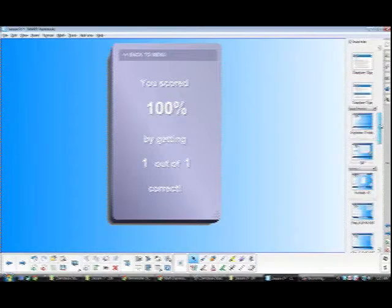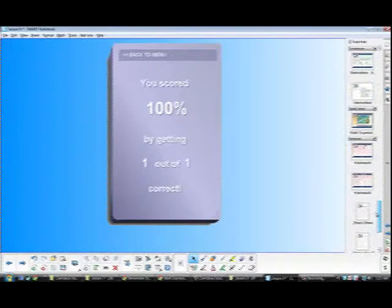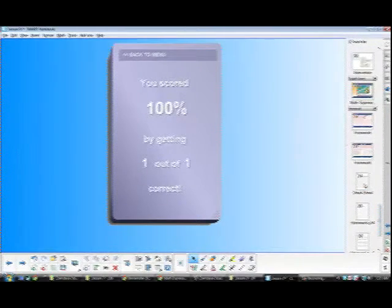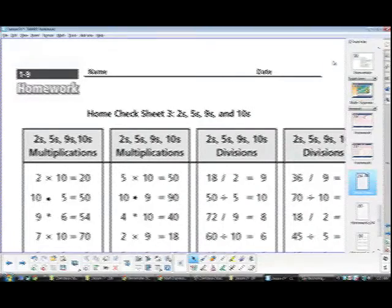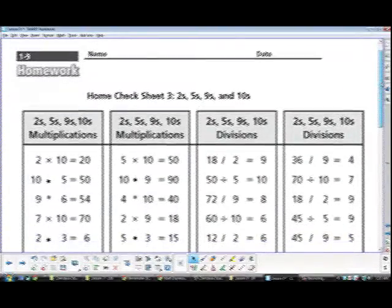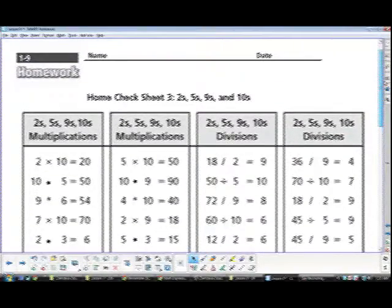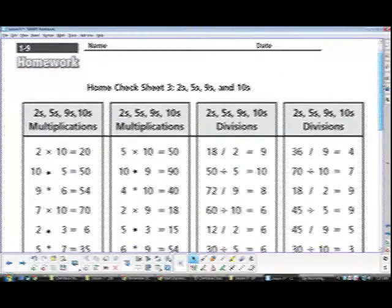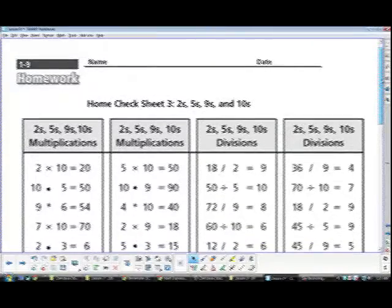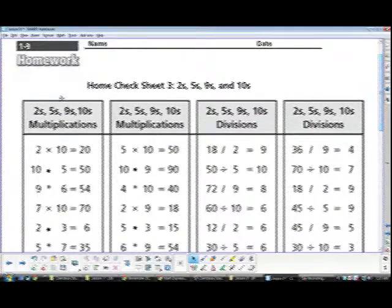Okay. We're on problem number 4. Well, before we get there, I got problem 5 through, I think, 11 today. This will be going home probably on Thursday, Friday, probably Friday. But, it's a home check sheet. Your 2s, 5s, 9s, and 10s all mixed up. 2 times 10 equals 20. 10 times 5 equals 50.